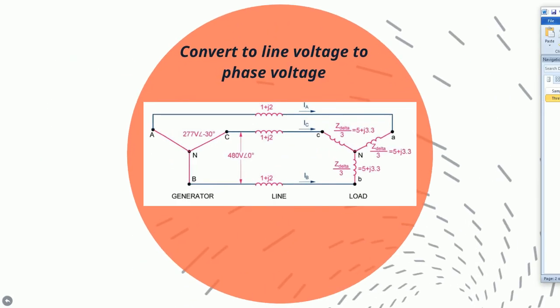The next step is to convert the line voltage of 480 volts to phase voltage to get a simpler circuit for solving for the line current. The phase voltage will be between C and neutral, for example. The conversion from line voltage to phase voltage is to divide the line voltage by root 3 and subtract the 30 degree angle difference. The result is shown here as 277 volts.